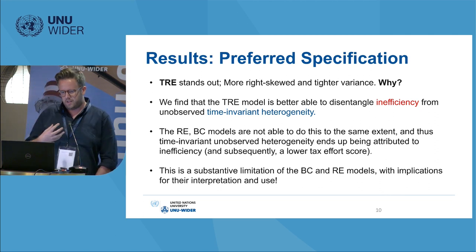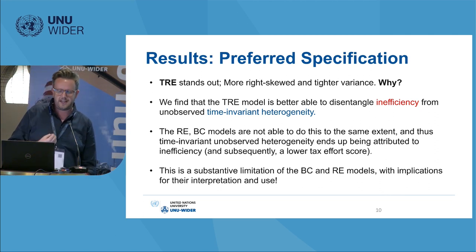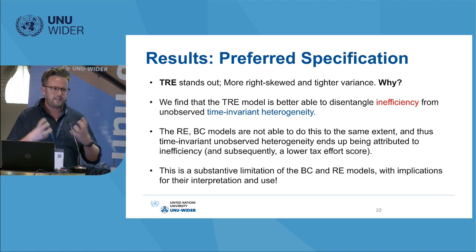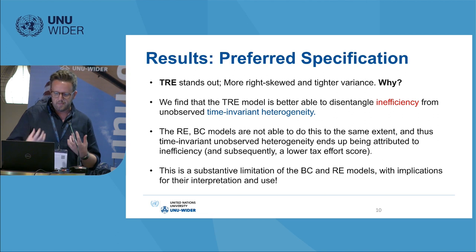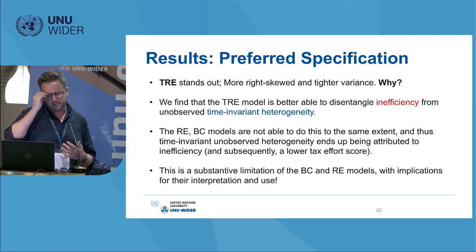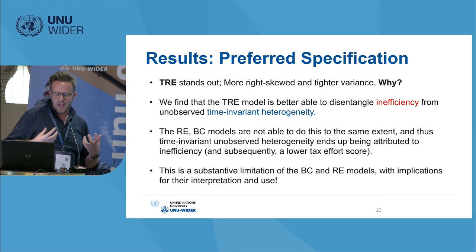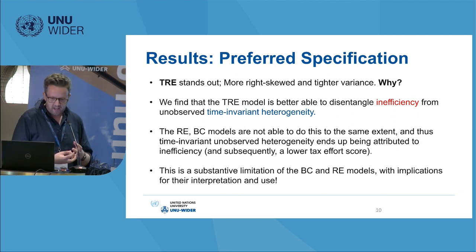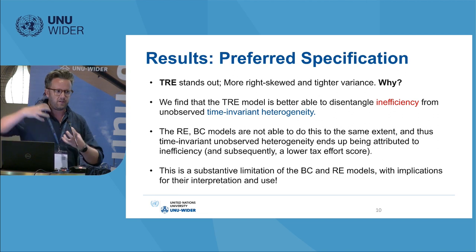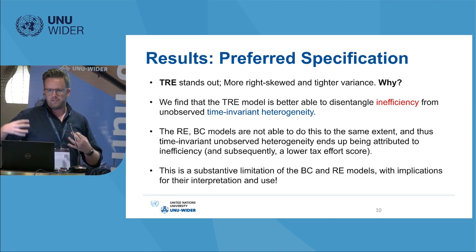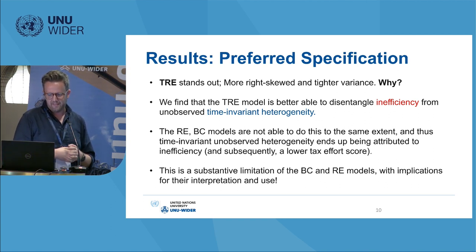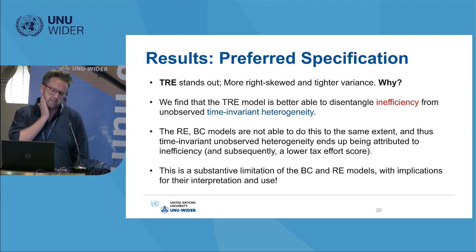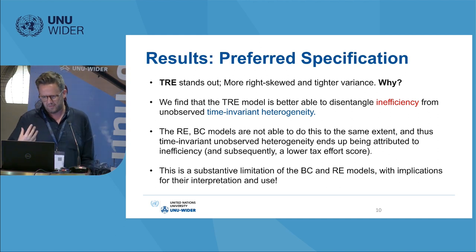We find that the true random effects model is better able to disentangle the inefficiency component from the random noise in the model. The previous approaches don't actually seem to be able to do this to as great an extent, and thus some time-invariant heterogeneity ends up being attributed to inefficiency — which isn't actually what we want to measure — because then you end up with a bigger inefficiency score and it looks like a given country is not doing as well as it could be at collecting tax revenue, when in fact it wasn't being modeled particularly accurately. We find this to be a substantive limitation of some of the approaches used before.